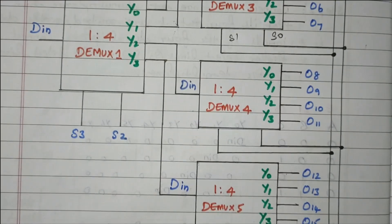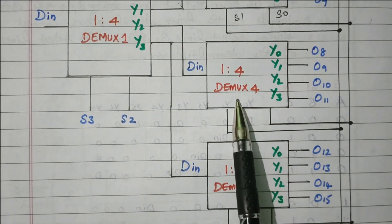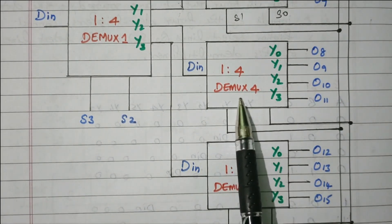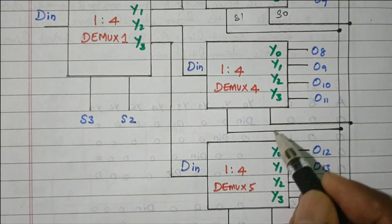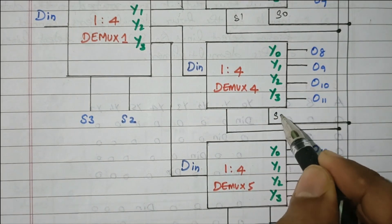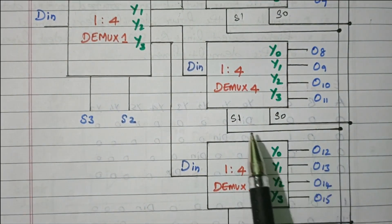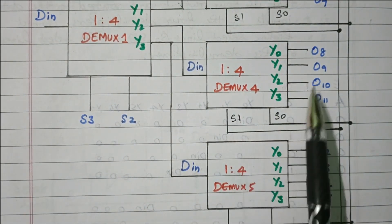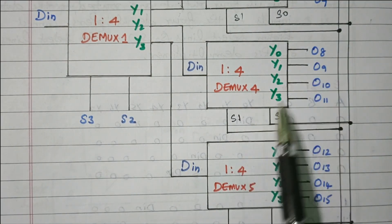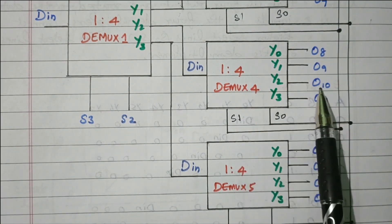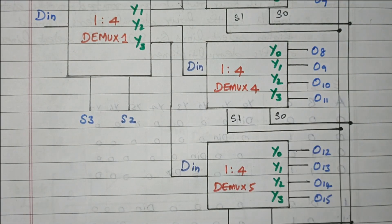When S3S2 is 10, DMUX4 will be enabled. It is connected with the LSB selection lines S0 and S1. When S1S0 is 00 then D8 is selected; 01 means D9; 10 means D10; 11 means D11.